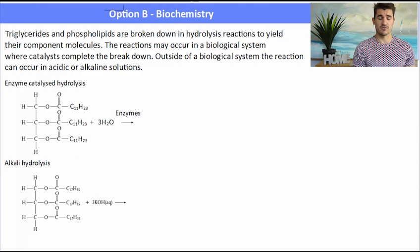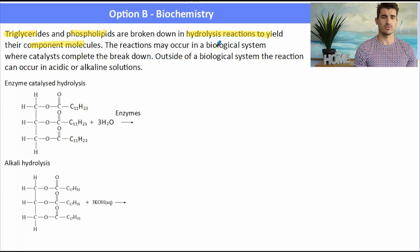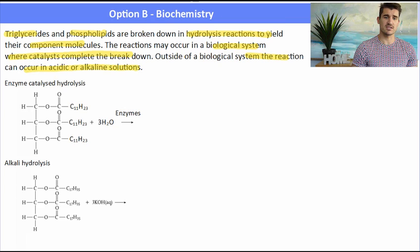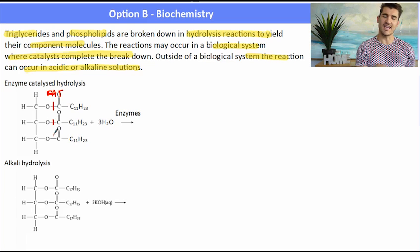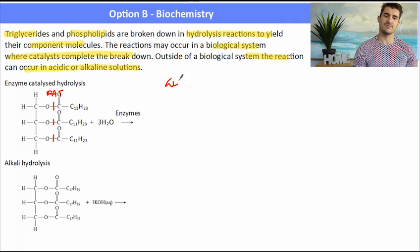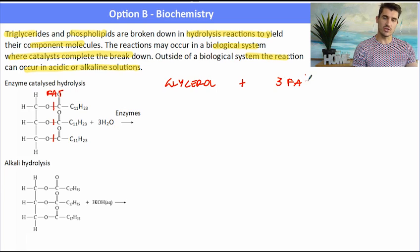Triglycerides and phospholipids are broken down in hydrolysis reactions to yield their component molecules. This reaction can occur in a biological system where a catalyst completes the breakdown, or we can also do it in the lab using acidic or alkaline solutions. The first one we'll look at is enzyme-catalyzed hydrolysis, where we have our triglyceride and the enzyme will come in and cut the ester functional group. Water will be added and what we yield is glycerol and three fatty acid molecules.